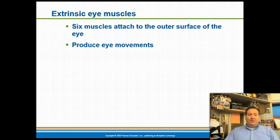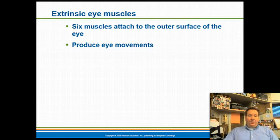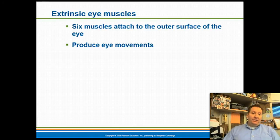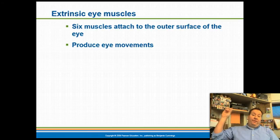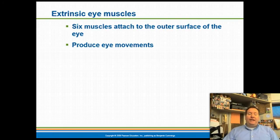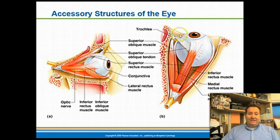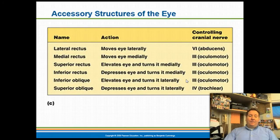We have six muscles associated with the eye that allow it to move in a variety of directions. In contrast, a cow only has four muscles associated with its eye, so a cow has to physically turn its entire head to look in a different direction. Because we have six eye muscles, we can move our eyeballs to see out of our periphery without turning our heads. For the test, you just need to know we have six muscles — you don't need to memorize all their names.